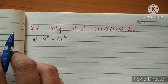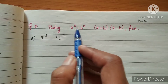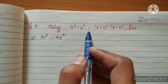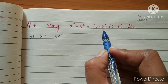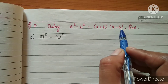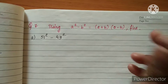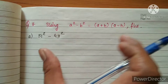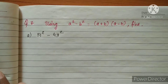Question number 7 is: using a squared minus b squared, such that a plus b multiplied by a minus b, find. This identity we have to use in the following questions of question number 7.